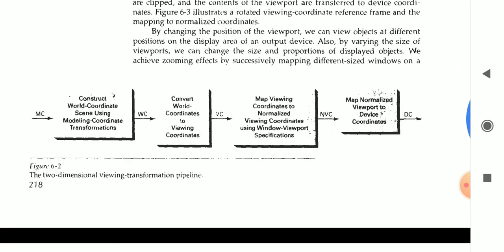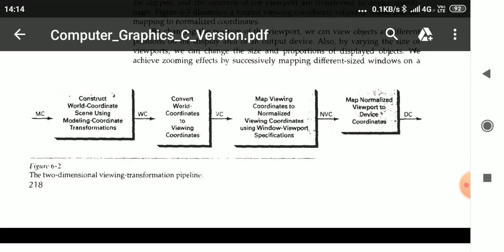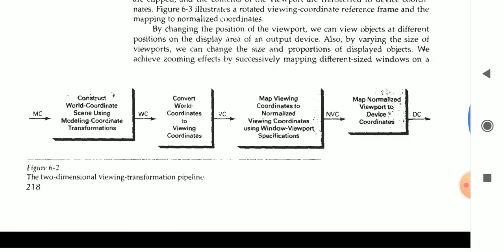Now see the pipeline of the viewing coordinate. MC means model coordinate. Every model, a triangle model or circle model will take the input coordinate, that has to convert it to world coordinate. The first block explains constructing the world coordinate scene using modeling coordinate transformation. After the transformation, the MC model coordinates are transferred to WC, that is world coordinate.